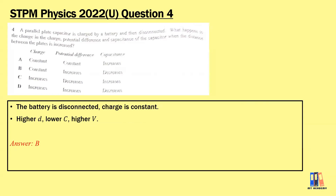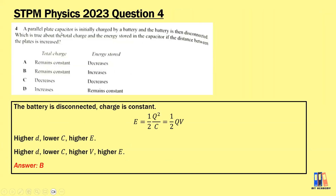From 2023: a parallel plate capacitor is initially charged by a battery and the battery is then disconnected. Which is true about the total charge and energy stored if the distance between the plates is increased? With battery disconnected, charge is constant, so either A or B. For energy, we have formulas half Q²/C, half QV, or half CV².